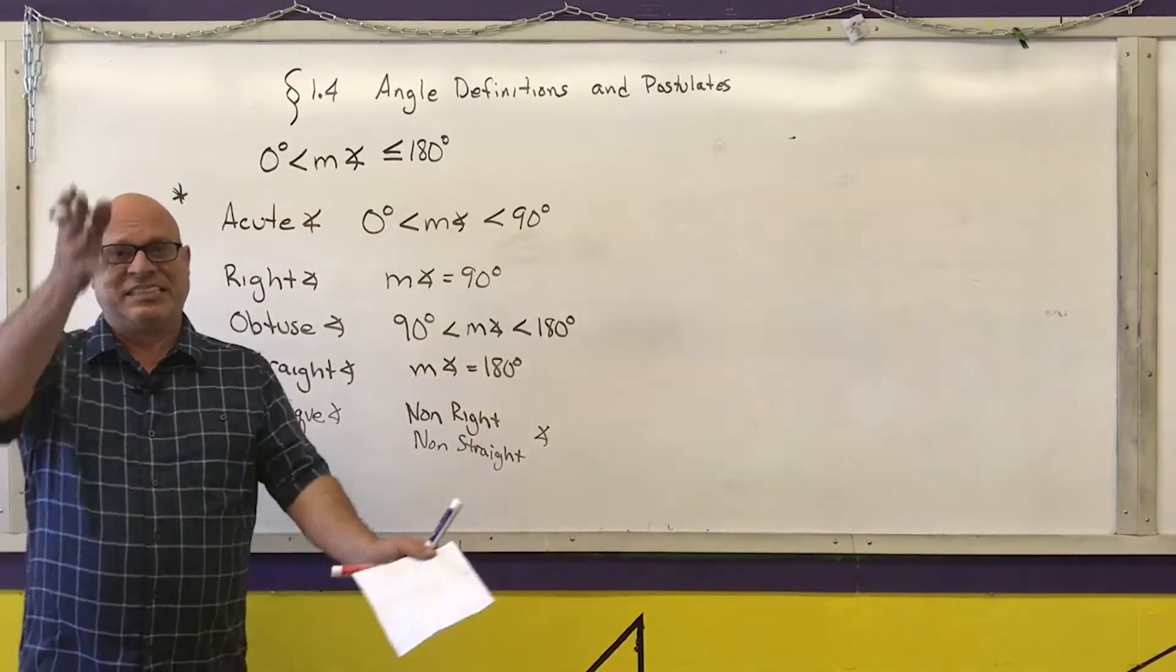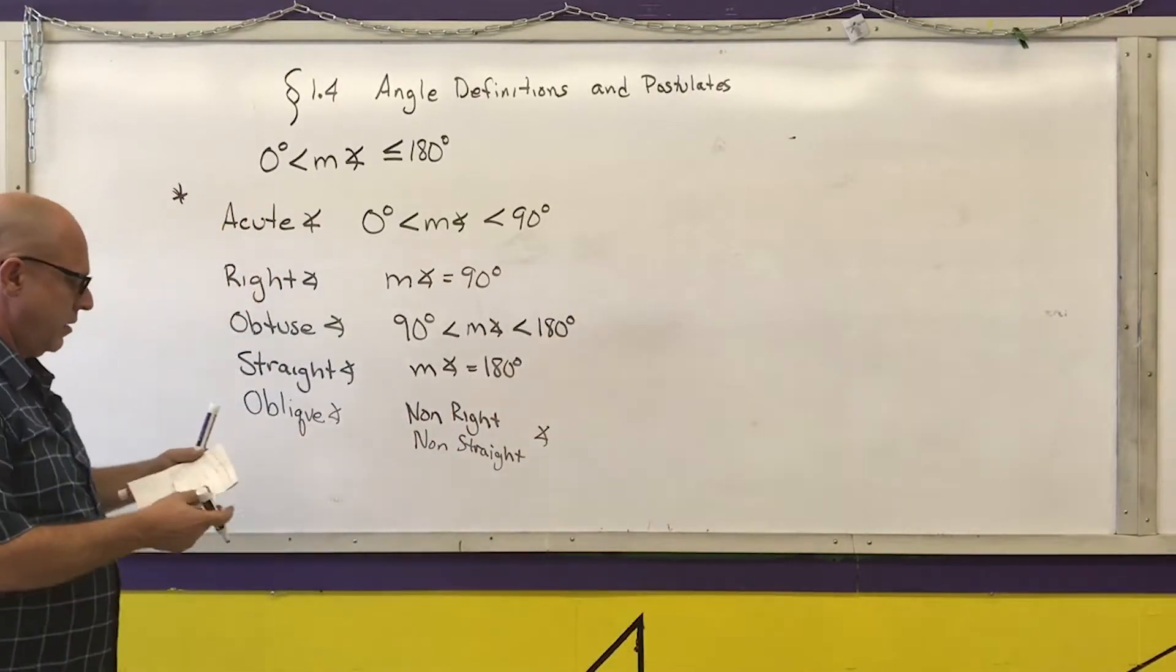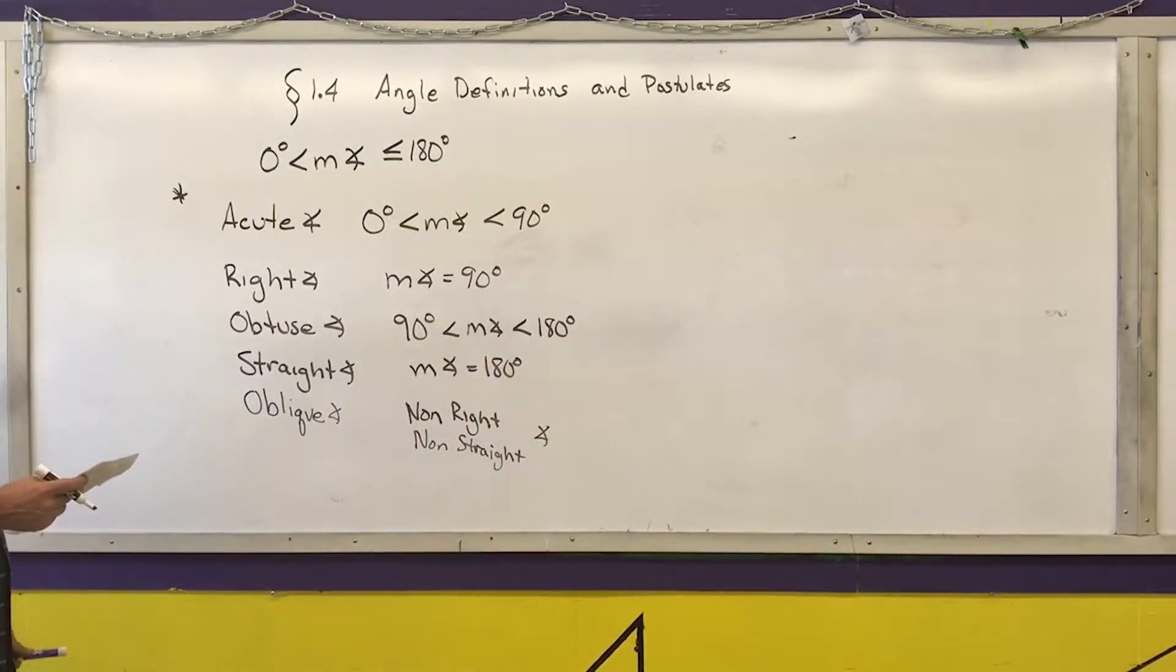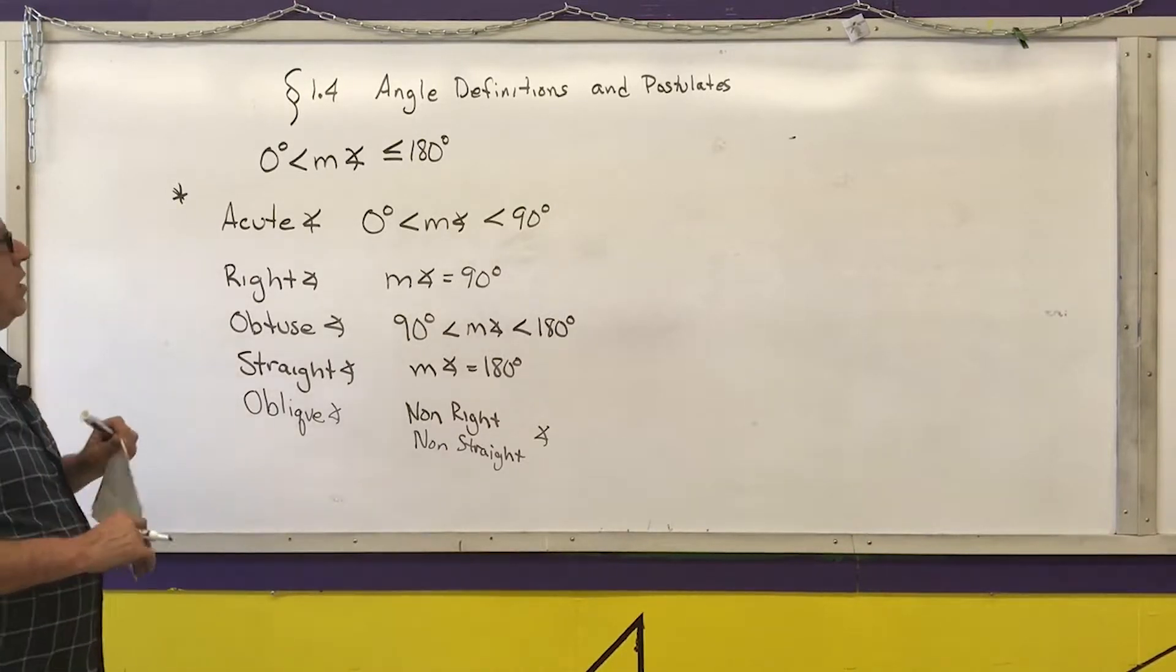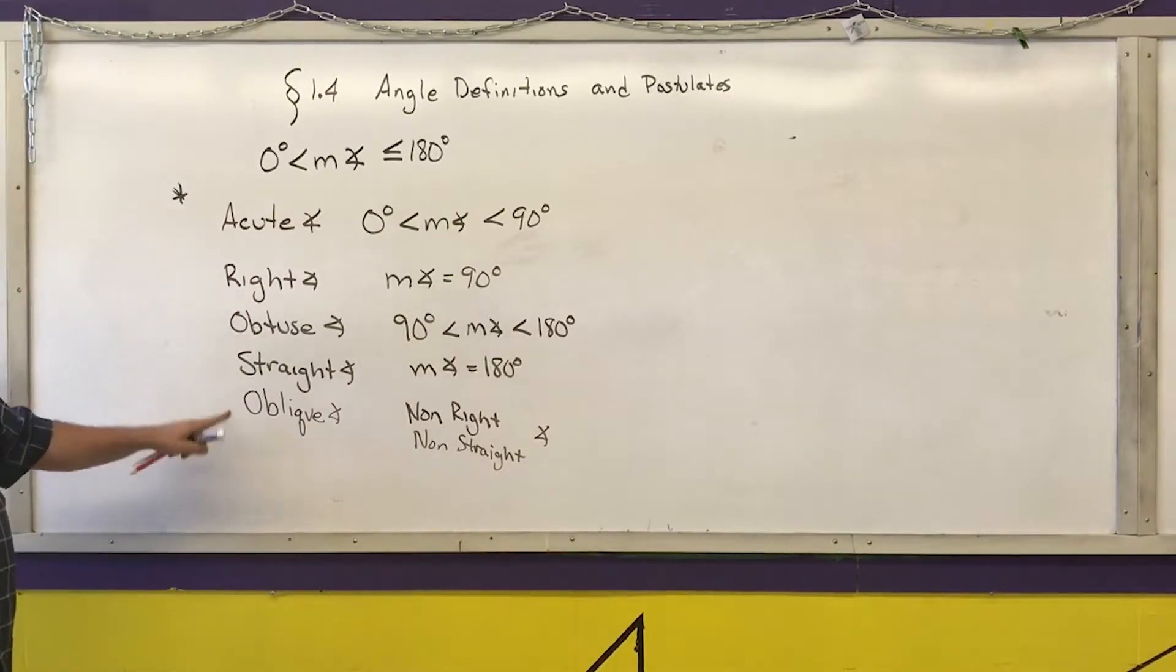So an oblique angle is anything that's not straight up and down or straight side to side. It's anything that tilts. In middle school you may have been taught about what's called a reflex angle but we will not talk about that in this class.